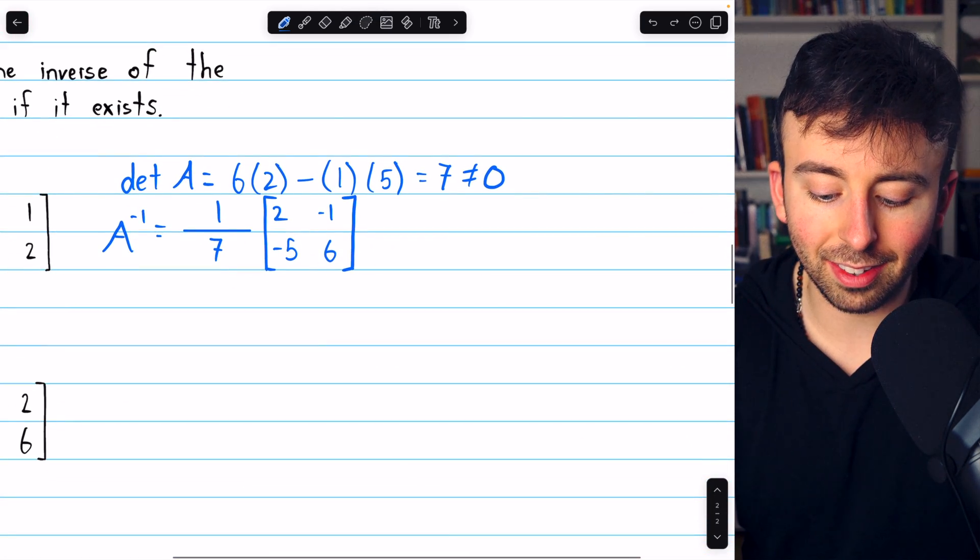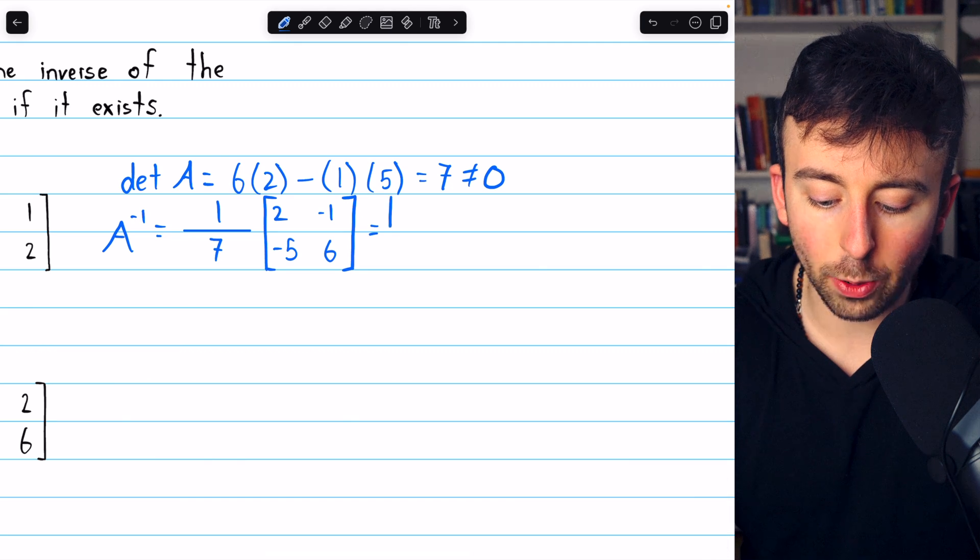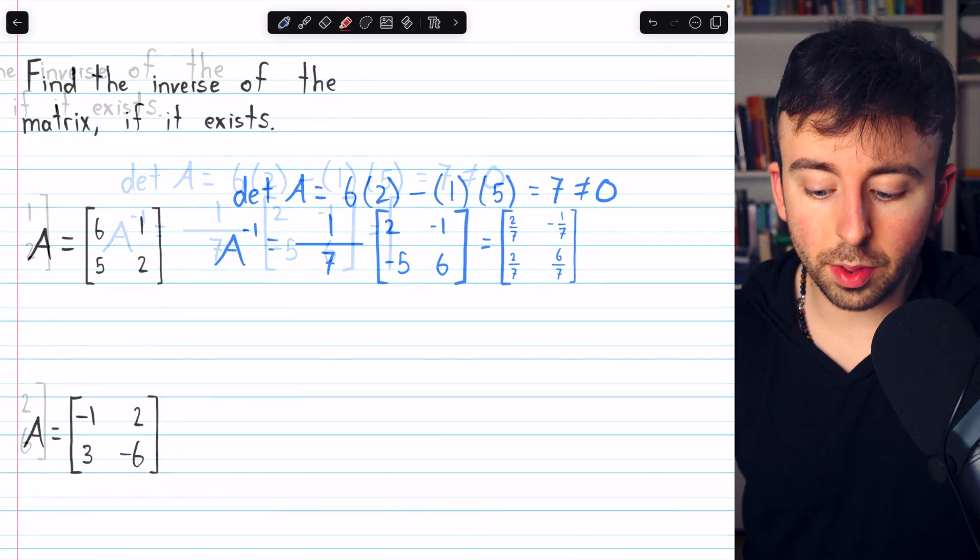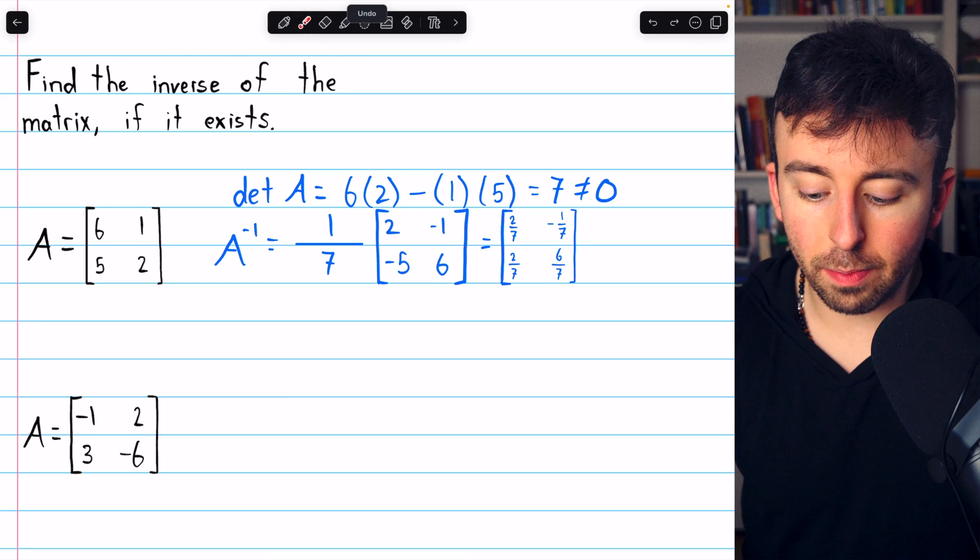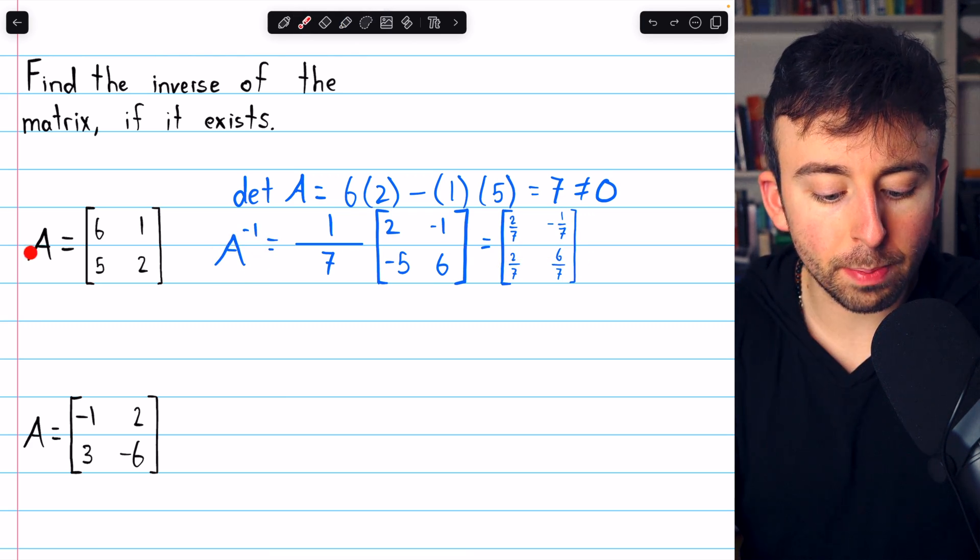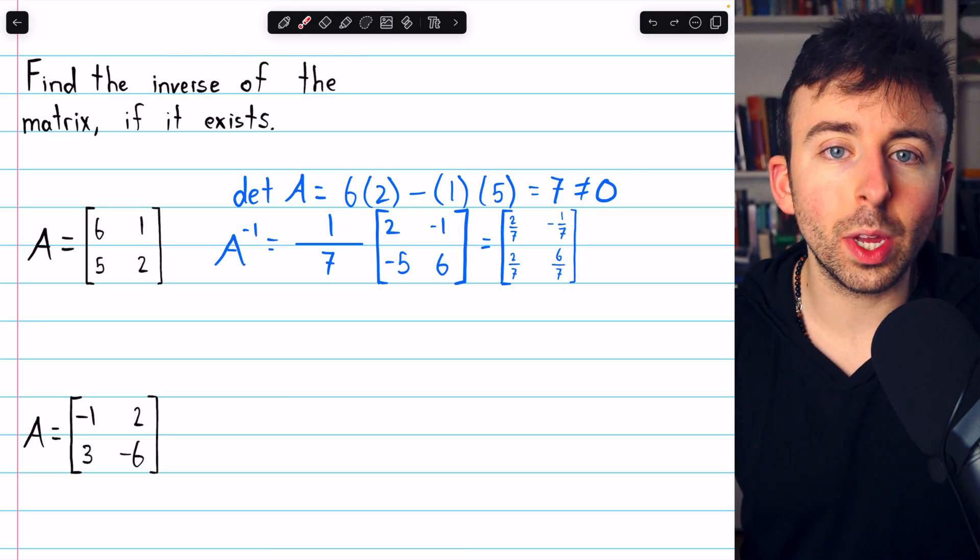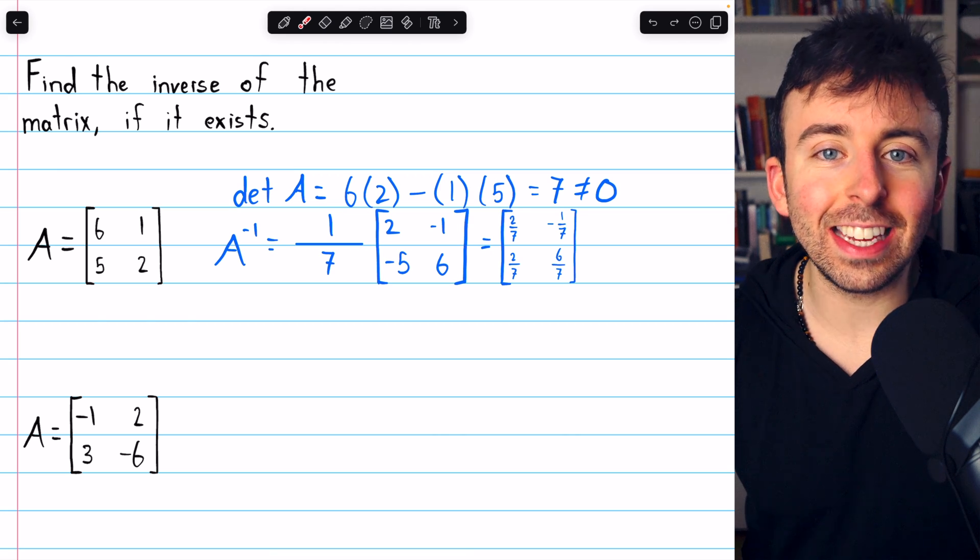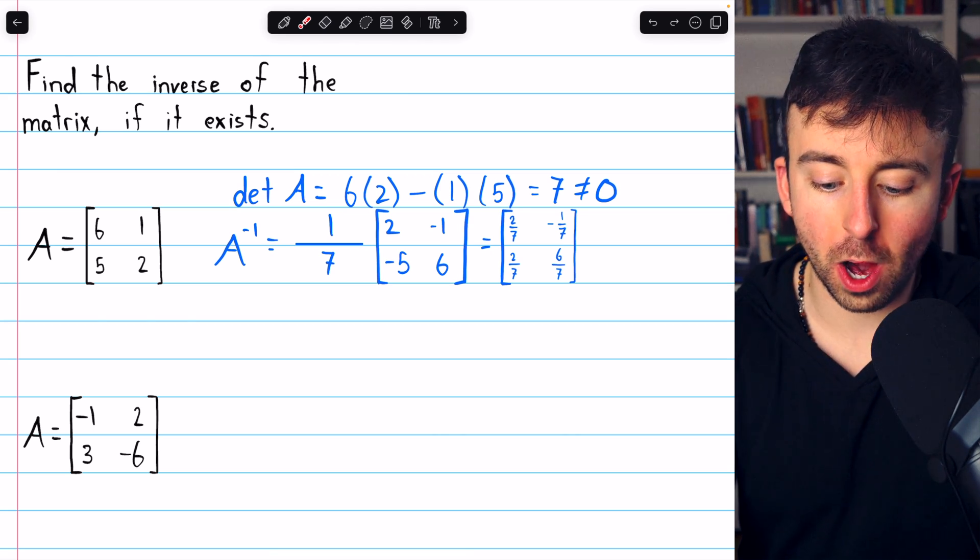We can go ahead and multiply the scalar through the matrix just to get our nice final answer. So there is our final answer. You could go ahead and multiply this A inverse by A to verify you get the identity, and then do it in the other order as well. I'll leave that to you if you want to try.